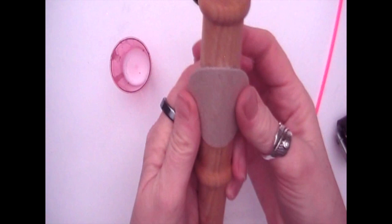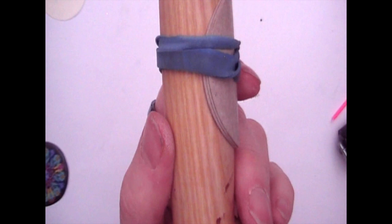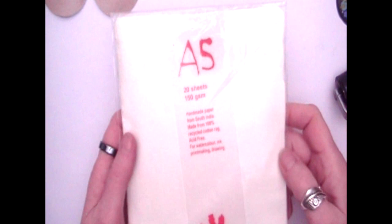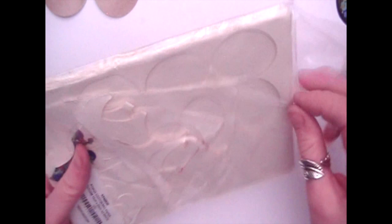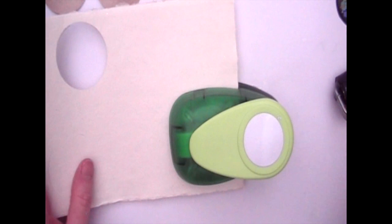you need to mould it round something like a wooden rolling pin and fasten with a rubber band. Next, you need to take some very strong paper, I've used this handmade paper from Cardi,